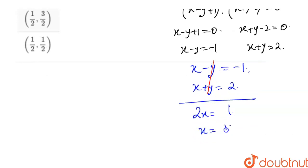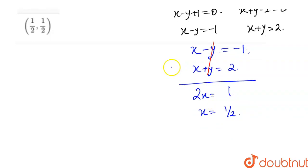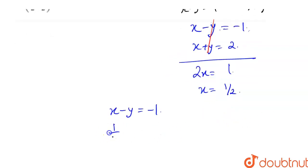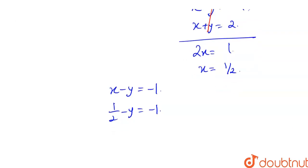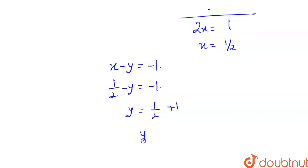So here x value is 1 by 2. Now x value is 1 by 2, I'll put it in the first equation. My first equation is x minus y is equal to minus 1. Now I have x value as half. So half minus y is equal to minus 1. Now y value will be 1 by 2 plus 1, which gives 3 by 2.